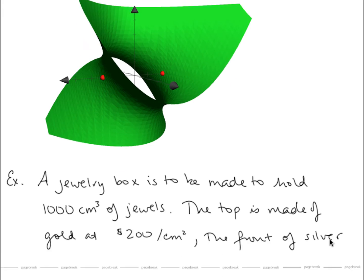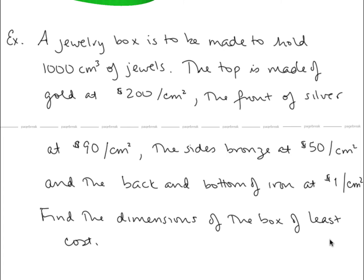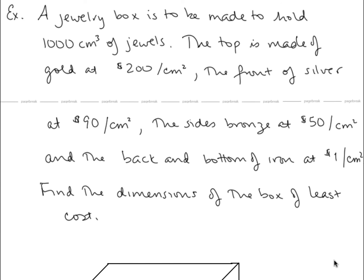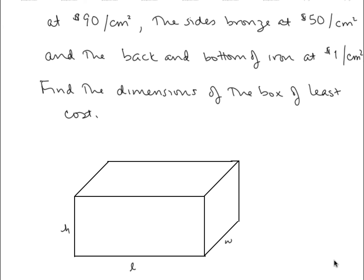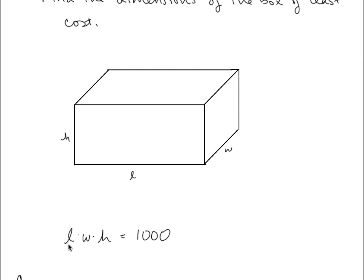Let's take a look at another example. A jewelry box is to be made to hold 1,000 cubic centimeters of jewels. The top is made of gold at $200 per centimeter squared. The front is silver at $90 per centimeter squared. The sides are bronze at $50 per centimeter squared. The back and bottom are iron at $1 per centimeter squared. We want to find the dimensions of the box of least cost. We draw a picture and assign variables: length, width, and height. The volume constraint is length times width times height equals 1,000.